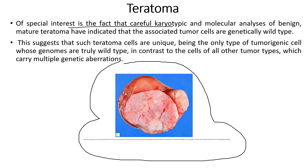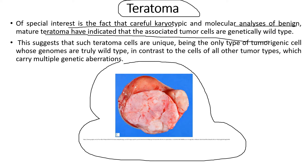Careful karyotypic and molecular analysis of benign mature teratomas has indicated that the associated tumor cells are genetically wild type. This is a very important feature of teratomas — these tumors are wild type and are not heterozygous. This suggests that teratoma cells are unique.